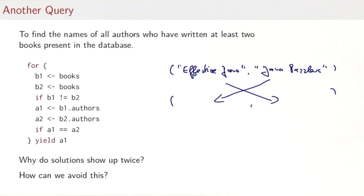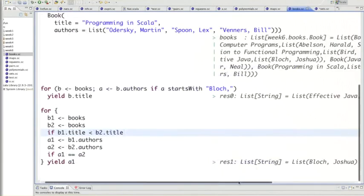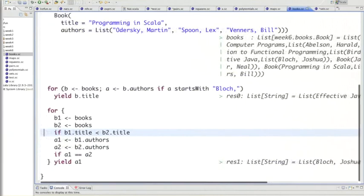Let's see what happens if we do that change. We say b1.title less than b2.title, and what we get—hooray—is indeed just a single author.